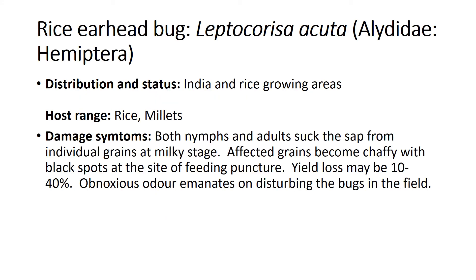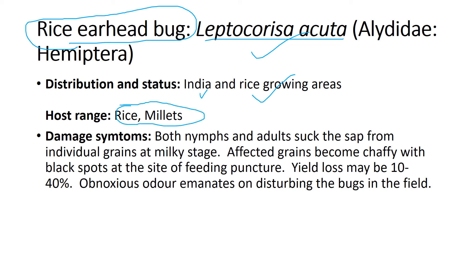The next pest is Rice Earhead Bug, biologically called Leptocorisa acuta. Distribution is mainly India and rice growing areas. Host range is only rice and millets — not grass or sugarcane. Damage symptoms: both nymphs and adults suck the sap from individual grains at the milky stage. This is the most differentiating feature — it sucks at the milky stage. Affected grains become chaffy with black spots on the side of the feeding puncture.